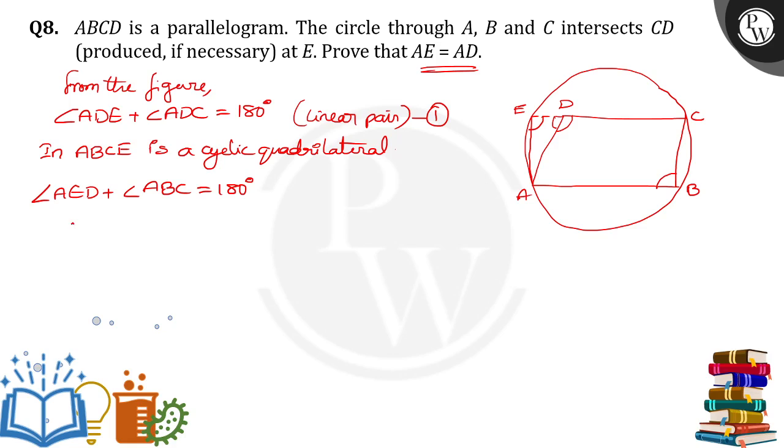Angle ADC equals angle ABC. Opposite angles in a parallelogram are equal. Take it as equation number 3.